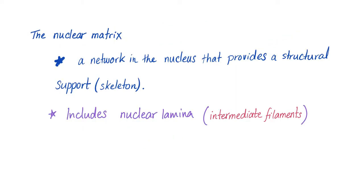The nuclear matrix is a network in the nucleus that provides a structural support, also known as skeleton. It includes something called nuclear lamina, which is a type of intermediate filaments that we will discuss later.